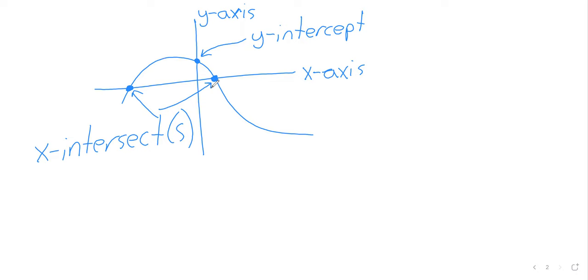A graph does not have to have either of those features. Here is an example of a graph that has an x-intercept, but doesn't have any y-intercept. It just sort of goes down and never touches the y-axis. Here is an example of a graph that has a y-intercept but doesn't have any x-intercepts. It never touches the x-axis.